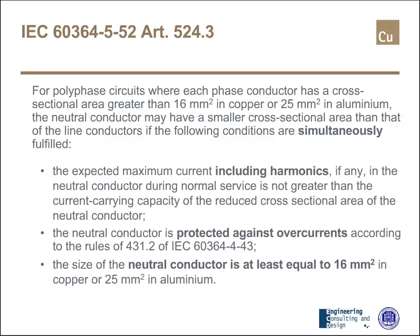We have two other conditions to be fulfilled just to reduce the neutral section. The neutral conductor is protected against overcurrent according to the rules of the same standards. And the last one: the size of the neutral conductor is at least equal to 16 mm² in copper or 25 mm² in aluminum.